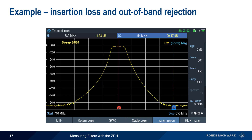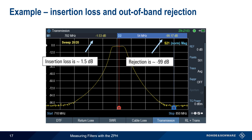Next we'll use a standard marker and delta marker to measure insertion loss and out-of-band rejection. Insertion loss is how much the filter attenuates signals within the pass band — this should be as small as possible, and here our filter has an insertion loss of about 1.5 dB. On the other hand, a high out-of-band rejection is generally desirable, since this is the amount of attenuation the filter applies to signals outside the pass band. Measured with a delta marker relative to the pass band, the out-of-band rejection for this filter is approximately minus 99 dB. Recall that using averaging and a lower resolution bandwidth can help in making accurate measurements of the level difference between the pass band and the stop band.